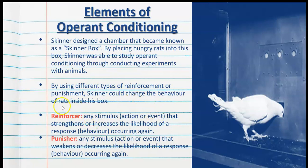A reinforcer is anything that strengthens or increases the likelihood of a behavior occurring again. The stimulus can be an action, an event, or an object. A punisher is anything that reduces, weakens, or decreases the likelihood of a response occurring again. The punishment can also be an object, action, or event.